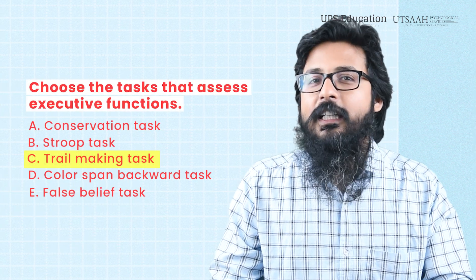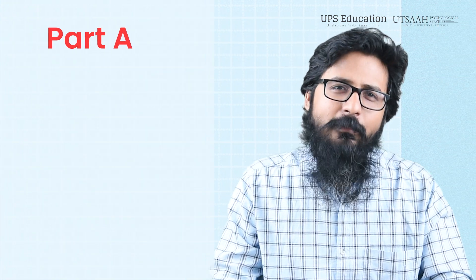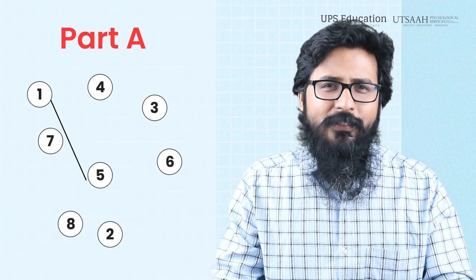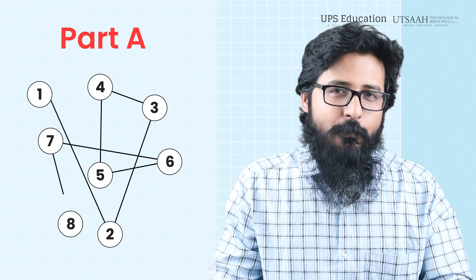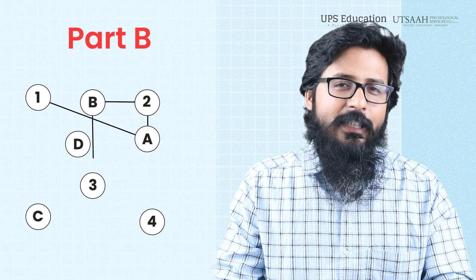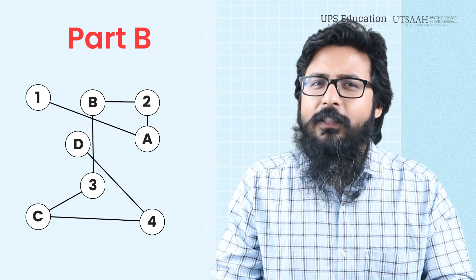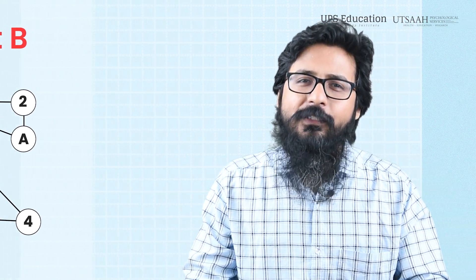The third is the trail making task. It consists of two parts: Trail Making Test Part A and Part B. In Part A, participants connect numbered circles in ascending order as quickly as possible. In Part B, participants connect circles alternating between numbers and letters in ascending order, like 1-A, 2-B, etc. Part B introduces a cognitive shift and set-shifting component, requiring participants to switch between different rules or cognitive sets, which is a key aspect of executive functioning, particularly cognitive flexibility.